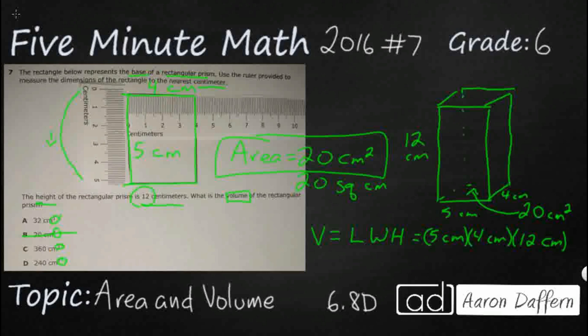Or the other option is sometimes you'll see base times height. And all that they're doing is we're just taking our length times width, and we're just combining that into our base. We already know what our base is. We did the 5 times 4, so that is going to be 20 cm squared times our height of 12 cm.